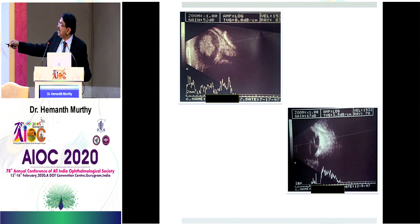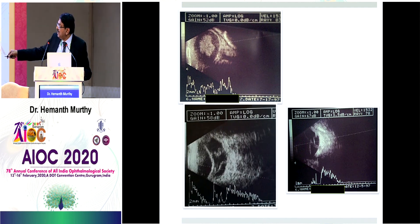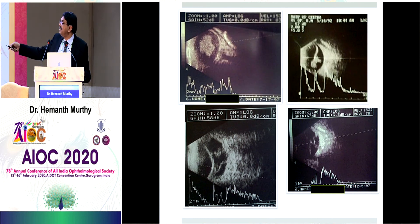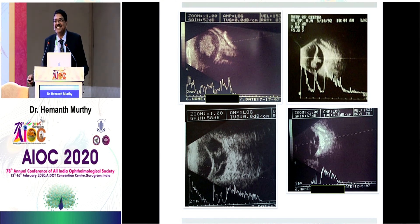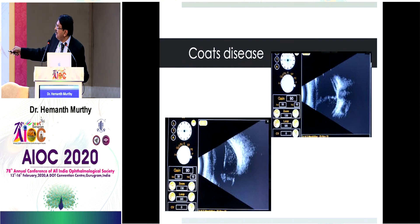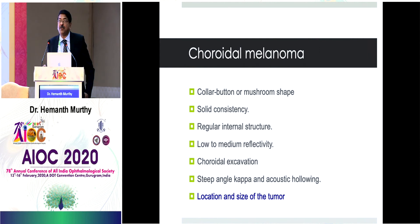Differential diagnoses include endophthalmitis, retinal detachment, retinopathy of prematurity showing tractional retinal detachment with tenting of the retina, and Coats disease where you see retinal detachment with cholesterol crystals showing constant movement. Choroidal melanoma has a collar-button or mushroom shape, is solid, with very regular structure, low to medium reflectivity, choroidal excavation, steep angle kappa, and acoustic hollowing. The melanoma cells replace the choroid, so you see choroidal excavation. Tumor progression on follow-up confirms the diagnosis of melanoma.